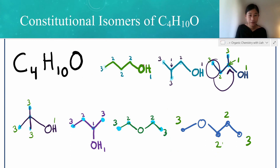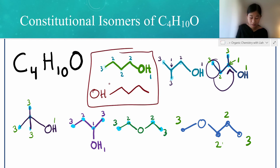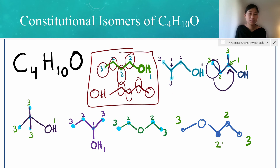Now, some things I want to point out. Notice how if we had decided to put this hydroxyl group on the other end, it would just be the same molecule — and being the same molecule means it is not a constitutional isomer. These two would be equal. So you need to pay attention to this so that you don't make the same molecule. Remember, constitutional isomers have the same formula but a different connectivity. These two would have the same connectivity because it's just flipped — and flipping doesn't count as a constitutional isomer.